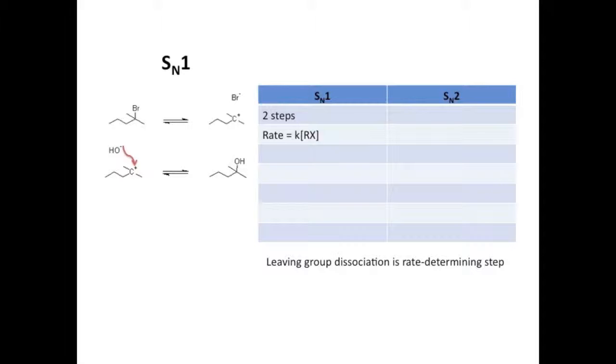That means that formation of the carbocation, the leaving group dissociation, is the rate determining step, and therefore the rate only depends on the concentration of the substrate. That said, there are some key factors that do affect the reaction, the first and most important of which is carbocation stability.